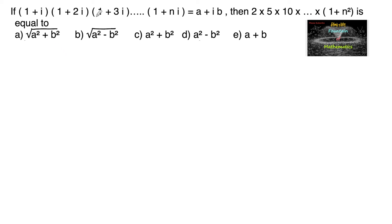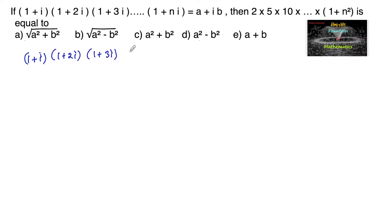Given: (1+i)(1+2i)(1+3i)·...·(1+ni) = a + ib, then 2·5·10·...·(1+n²) is equal to what? So given (1+i)(1+2i)(1+3i)·...·(1+ni) which is equal to a + ib.